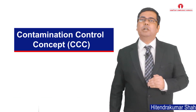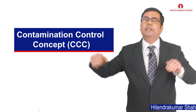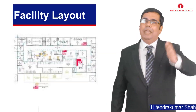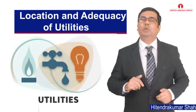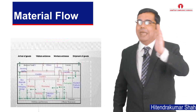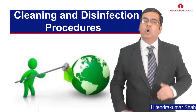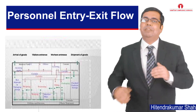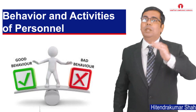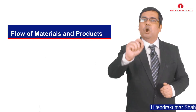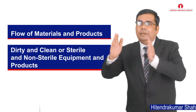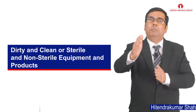The objective of this contamination control concept should be clearly defined and formulated in writing. The basic elements to be considered in contamination control concepts are: facility layout, HVAC system, location and adequacy of utilities, drain systems, flow pattern and mechanism for supply and removal of materials, products and waste, cleaning and disinfection procedures, personnel flow and procedures for entry and exit, provisions for corrective measures within the critical processing zone, behavior and activities of personnel in the clean room, and flow of materials and products to prevent cross-contamination and mix-up between products and between dirty and clean or sterile and non-sterile equipment and products.